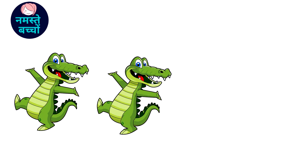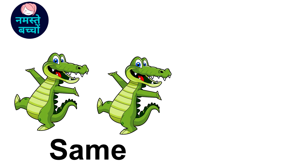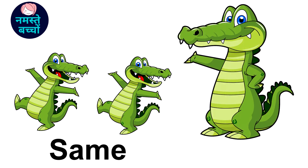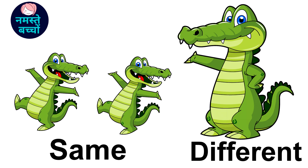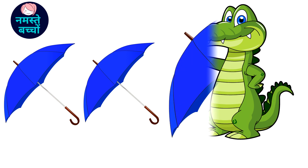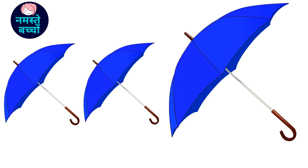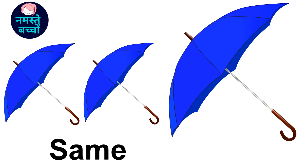Here are two baby crocodiles which are the same in size and the same in color, so we can say they are the same. Here is also a mummy crocodile which is the same in color but different in size, so we can say the mummy crocodile is different from the baby crocodiles.